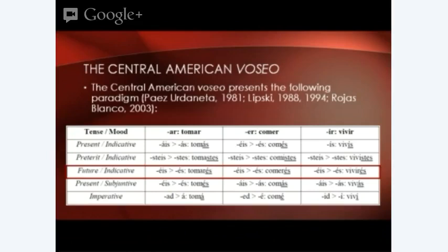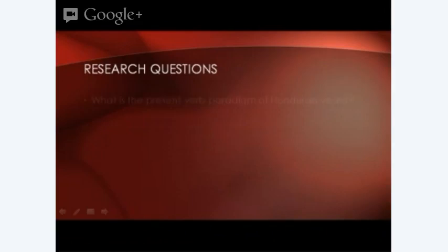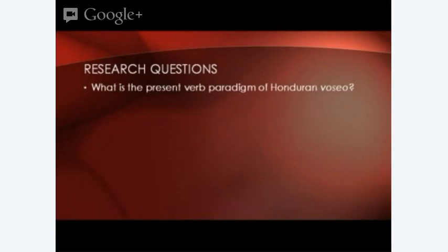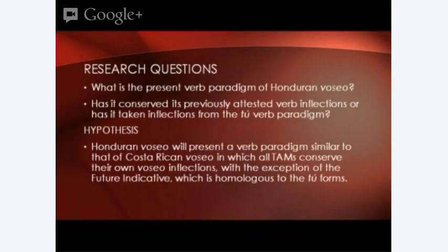With all of this in mind, I came up with two research questions: one, what is the present verb paradigm of Honduran voseo? And two, has it conserved its previously attested verb inflections or has it taken inflections from the tú verb paradigm? I hypothesize that Honduran voseo will present a verb paradigm similar to that of Costa Rican voseo studied by Rojas Blanco, in which all tense, aspect, and moods conserve their own verb inflections, with the exception of the future indicative, which is now homologous to the tú forms.